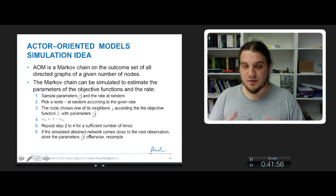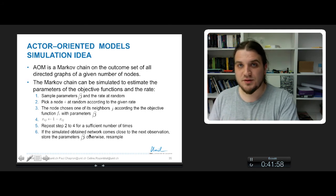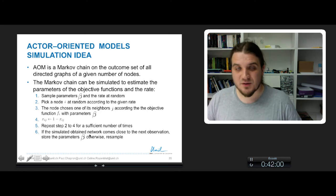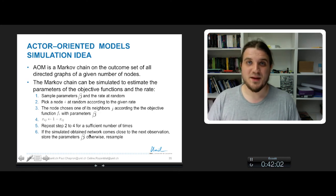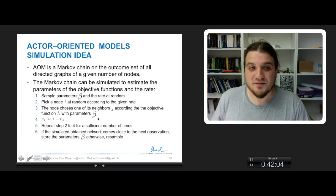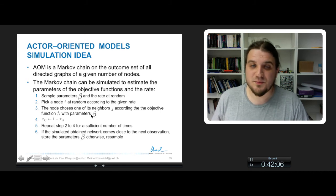makes your modified network closer to the next observation of your data, it means that you have some parameter beta that are quite good. So you keep them, and you iterate,